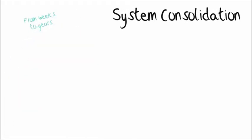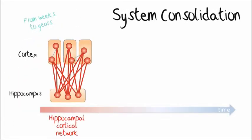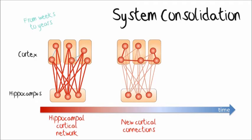In systemic consolidation, the hippocampal cortical network strengthens its cortico-cortical connections and establishes new ones, allowing them to become hippocampus-independent.